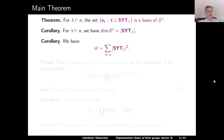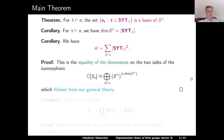Another corollary is the following identity: n! equals the sum over all partitions lambda of n of the square of the cardinality of the set of standard Young Tableaus of shape lambda. This equality follows by noting that both sides compute the dimension of the same isomorphism: the left regular representation of S_n, whose dimension is n!, decomposes as a direct sum of Specht modules S^lambda, each appearing with multiplicity equal to its dimension. Taking into account the previous corollary, we get exactly our identity.